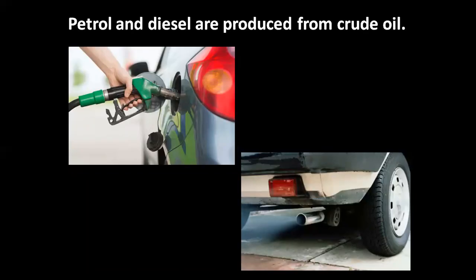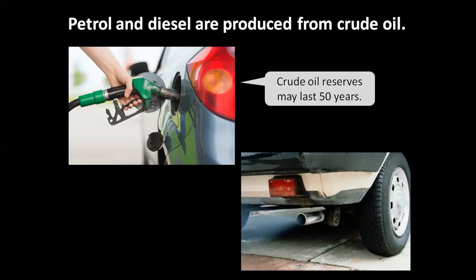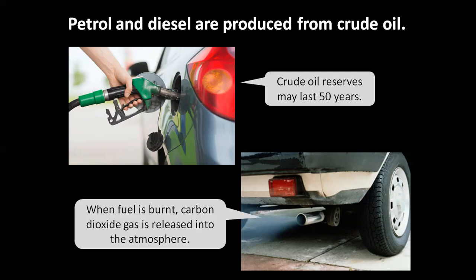Coal and diesel are produced from crude oil. Crude oil reserves may last 50 years. When fuel is burned, carbon dioxide gas is released into the atmosphere.